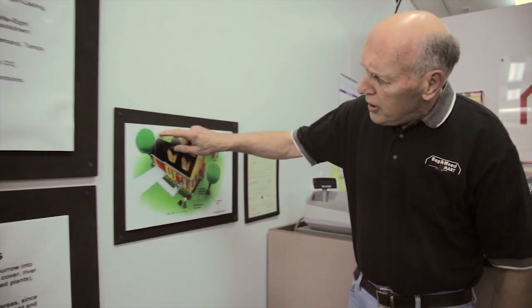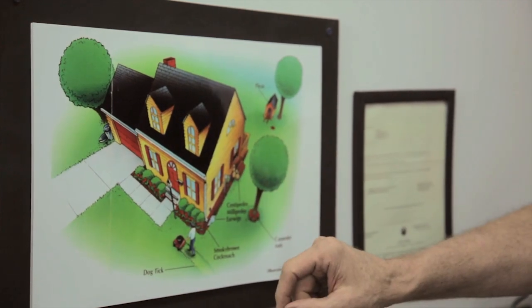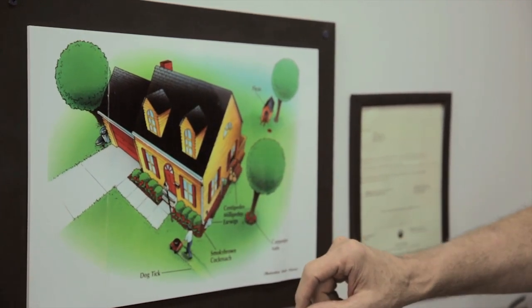What you want to do, and I'll go to my little picture of your house, we want to put an invisible barrier around the whole building to kill them outside before they get in. And you do that with two products.